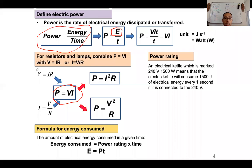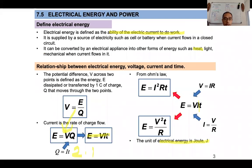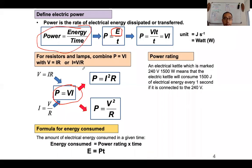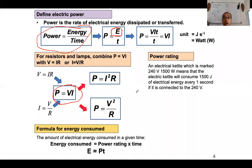There are really only two formulas to remember: E = VIT (think 'vitamin E') and P = E/t (think 'PET'). Vitamin E is one straight line, PET is one up one down. Derive the rest using Ohm's law rather than memorizing all six formulas at once — that's a waste of time when you have many other formulas to think about.